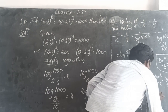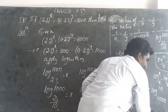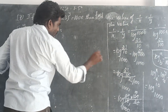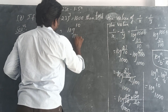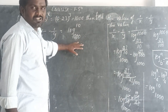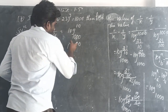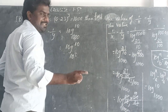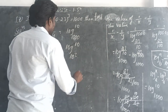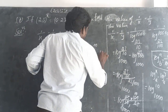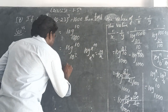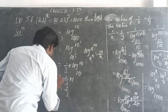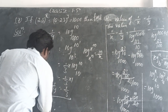That is log 10 base 1000. Writing 1000 as 10 cubed: log 10 base 10³. Using the formula log x^n base x^m equals m/n, we get 1 by 3 times log 10 base 10. Since log 10 base 10 equals 1, therefore 1/x minus 1/y equals 1/3.